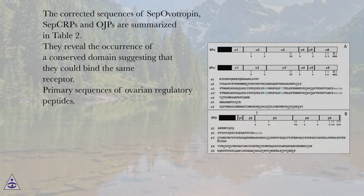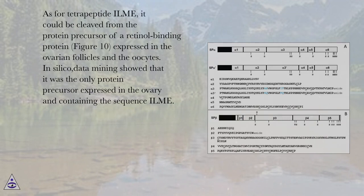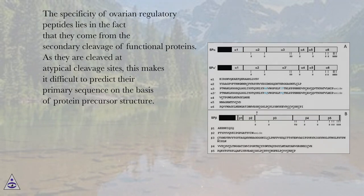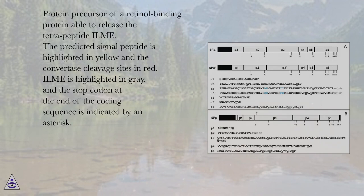The corrected sequences reveal the occurrence of a conserved domain, suggesting that they could bind the same receptor. Primary sequences of ovarian regulatory peptides. As for tetrapeptide ILM, it could be cleaved from the protein precursor of a retinol-binding protein (figure 10), expressed in the ovarian follicles and oocytes. In silico data mining showed that it was the only protein precursor expressed in the ovary containing the sequence ILM. The specificity of ovarian regulatory peptides lies in the fact that they come from the secondary cleavage of functional proteins; as they are cleaved at atypical cleavage sites, this makes it difficult to predict their primary sequence on the basis of protein precursor structure. In figure 10, the predicted signal peptide is highlighted in yellow, the convertase cleavage sites in red, ILM is highlighted in gray, and the stop codon is indicated by an asterisk.